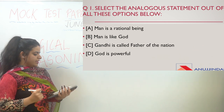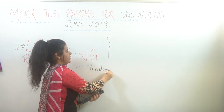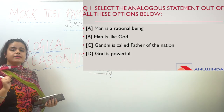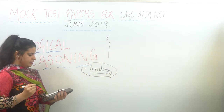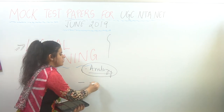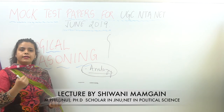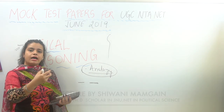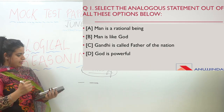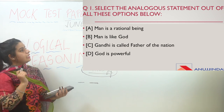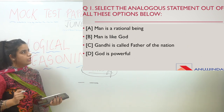Your first question is: select the analogous statement from the options below. This type of question comes in your exam every year. An analogous statement is when you compare two things to show a point — you substitute someone or give an example to prove your point. The options are: Man is a rational being; Man is like God; Gandhi is called father of the nation; God is powerful.